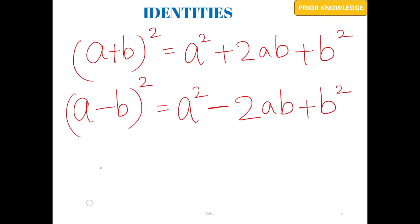The terms remain the same — it's just the sign in the middle that changes, giving you all positive terms for the plus identity. When you have a negative, make sure the term 2ab carries the negative sign. This is important so you can identify which identity is being used from the terms given.